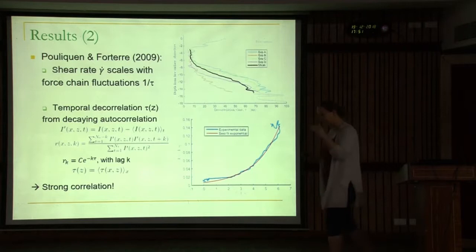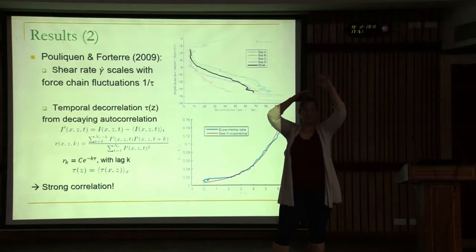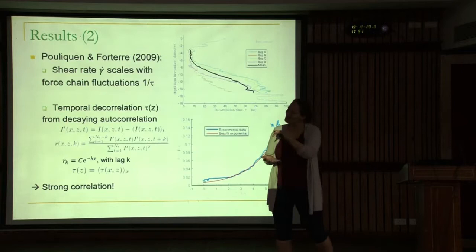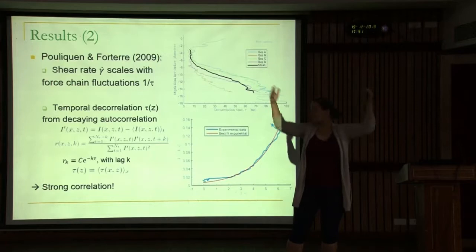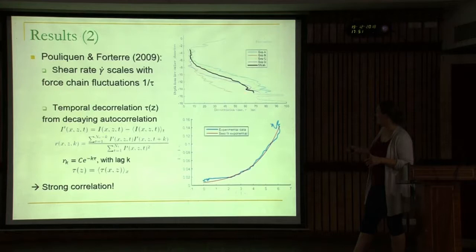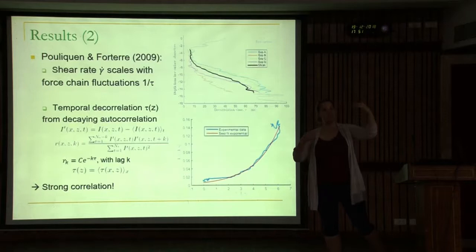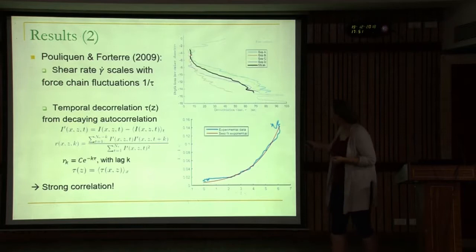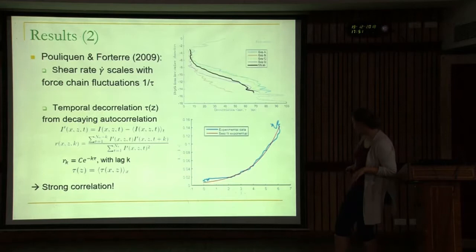Another point to illustrate: we have force chains that are long-lived close to the base where things do not move, and short-lived close to the free surface. So we can look at the decorrelation time of force chains: if it's long, the force chains are very sustained; if it's short, they break and form continuously. You see that the decorrelation time increases with depth.